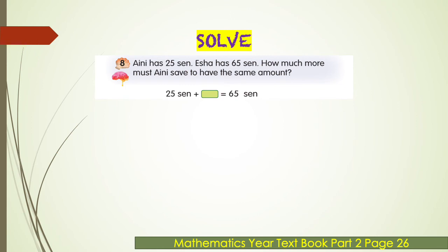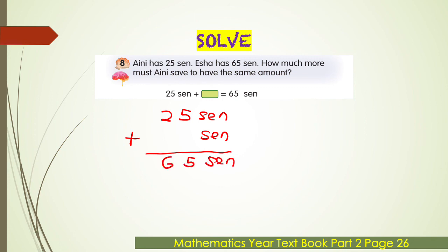Question eight. Aini has 25 cents and Nisha has 65 cents. How much more must Aini save to have the same amount as Nisha? The number sentence is: 25 cents plus what equals 65 cents. Write in standard written method: 5 plus what equals 5 — that's 0. Then 2 plus what equals 6 — count on from 2 to 6: 2, 3, 4, 5, 6 — that is 4. So the answer is 40 cents. Aini must save another 40 cents to have the same amount as Nisha.